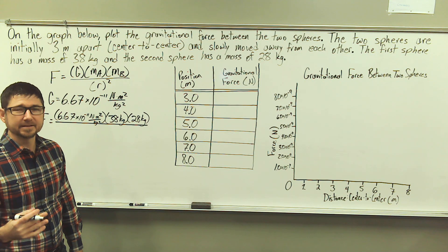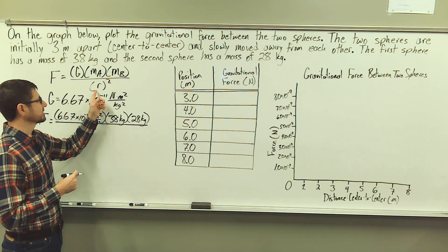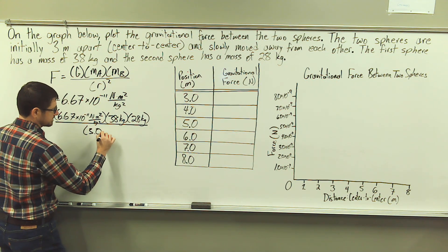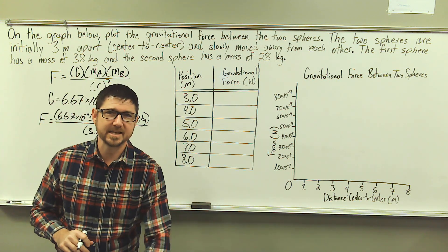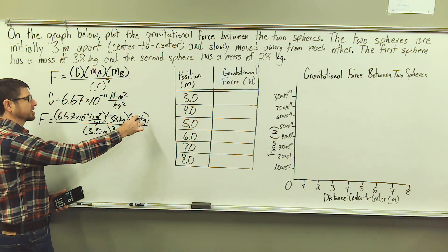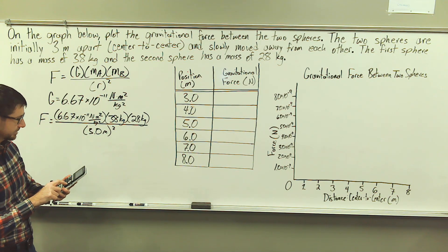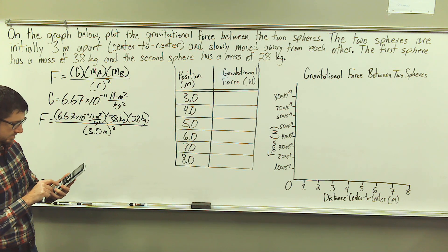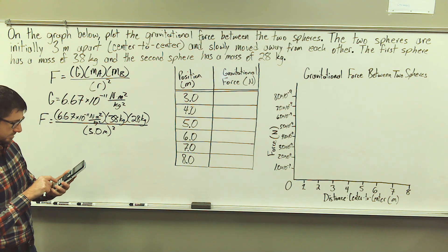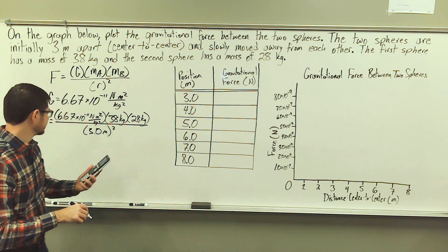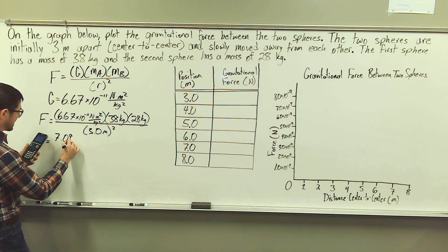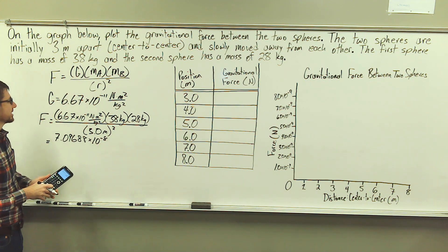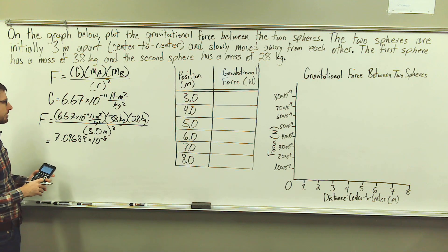We are going to divide this by the center-to-center distance squared, identified by R. So it starts out at a position of 3 meters, and we are going to square that value. So let's take out our trusty calculator here. We're going to take the product of these three values here in the numerator.